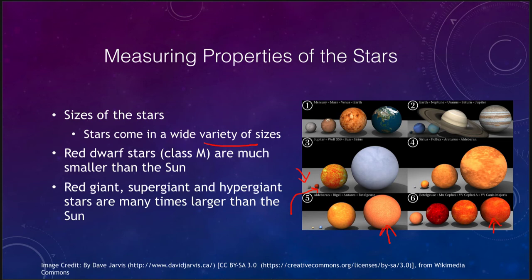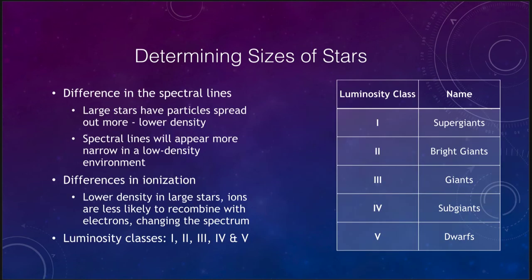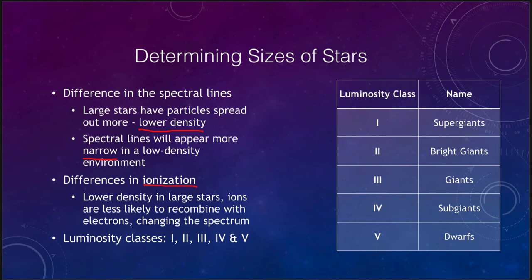How can we determine the size of a star? We can use the spectral lines to help expand our classification. Large stars are more spread out and have a lower density, so the spectral lines appear more narrow. A very large star will have very narrow spectral lines, while a very small star will have a higher density and therefore much broader spectral lines. We will also see differences in ionization — the lower density in large stars means ions are less likely to recombine, giving a slightly different spectrum.